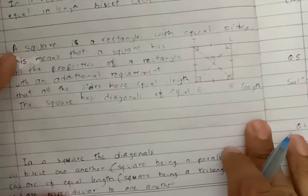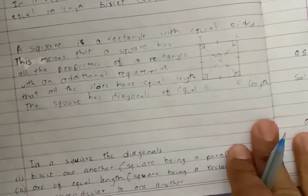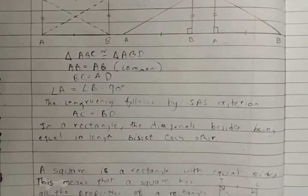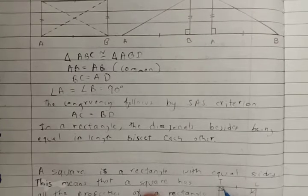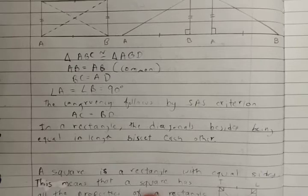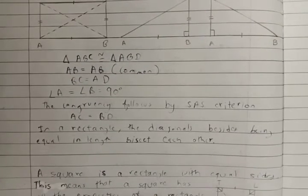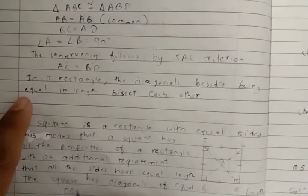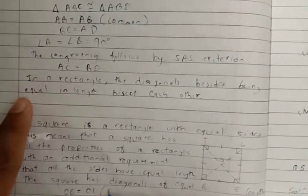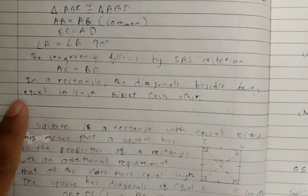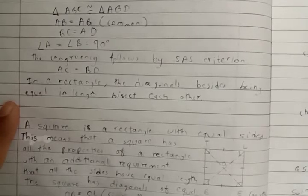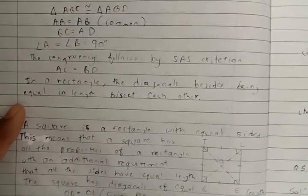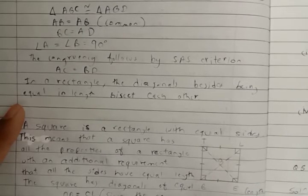Now we have to prove that angle BOT and angle LOT are perpendicular - we have to prove these angles are right angles. Here the length OB equals length OL since the square is a parallelogram.